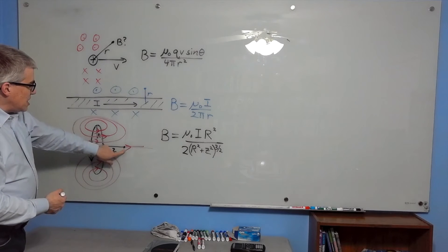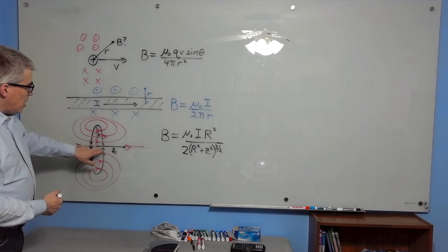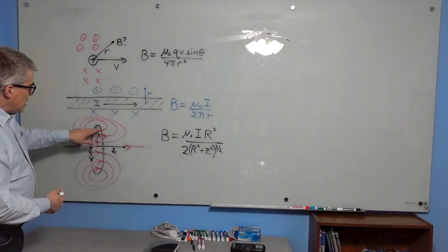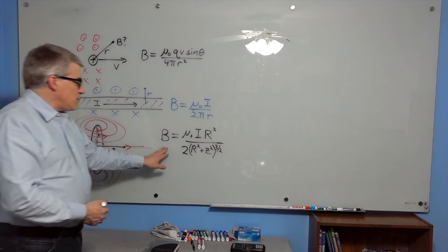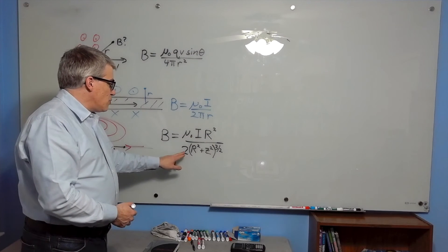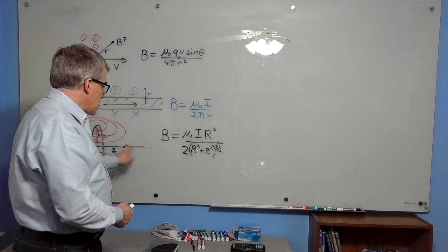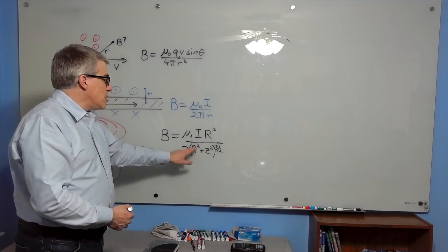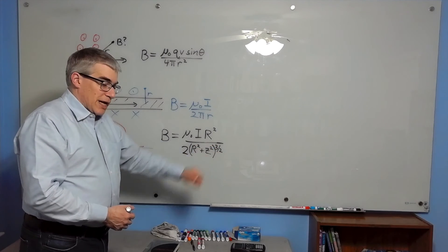If you are a distance z away from the center, well, directly along the axis, and the loop has radius big R, the magnetic field is going to have a strength of mu naught i r squared over 2 times basically the hypotenuse to the third power, big R squared plus z squared to the three halves.